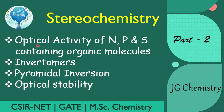In this particular video we will be learning about the optical activity of heteroatom-containing molecules like nitrogen, phosphorus and sulfur. You will see what are invertomers, what is pyramidal inversion, and how we can get optical stability with these heteroatom-containing organic molecules. This topic is very important for MSc chemistry, CSIR NET and GATE students.